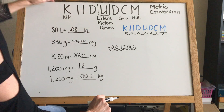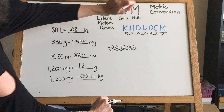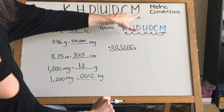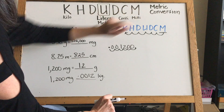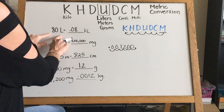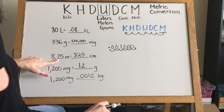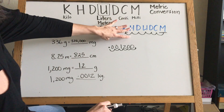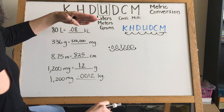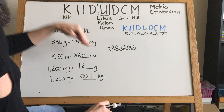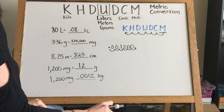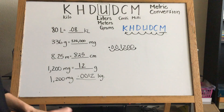That's how we convert using the metric system. It doesn't matter if we're converting liters, meters, or grams — you can always use King Henry. Remember the U is your unit of measure, and milli uses a double letter. Start with whatever they give you, place your decimal at that unit of measure on the chart, and move it left or right — either dividing or multiplying. All right!